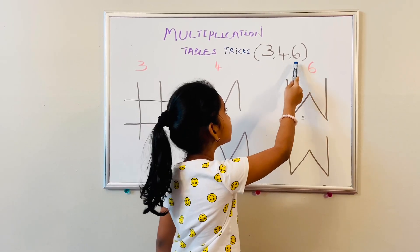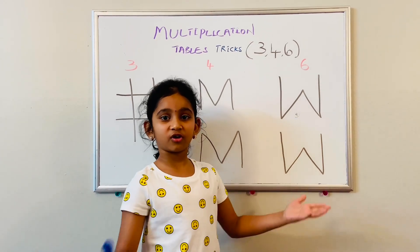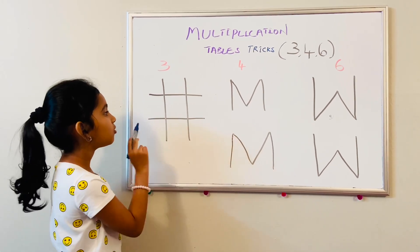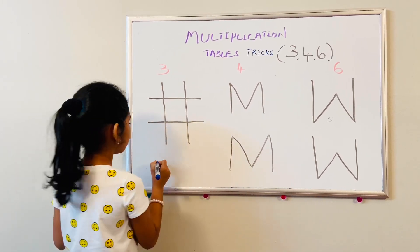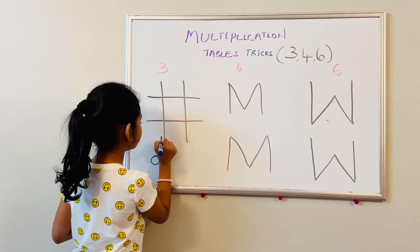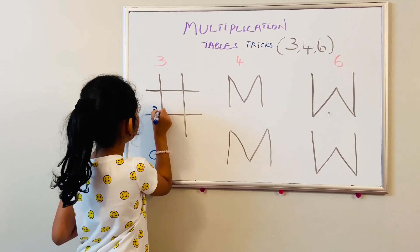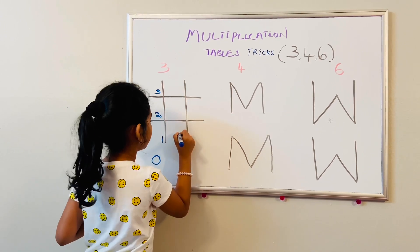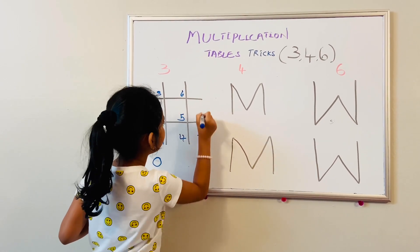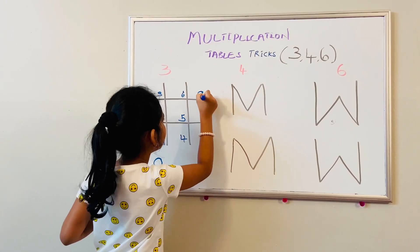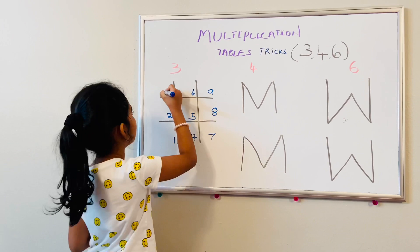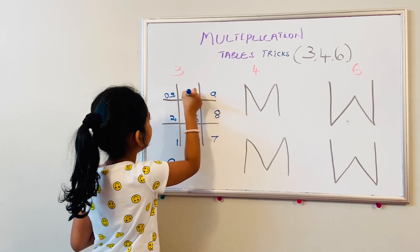Let's start with the third table. For the third table, we have to write like a tic-tac-toe, and then from the bottom write zero, and then write one, two, three, four, five, six, seven, eight, nine. Now, for the first row, we have to write zeros: zero, zero, zero.